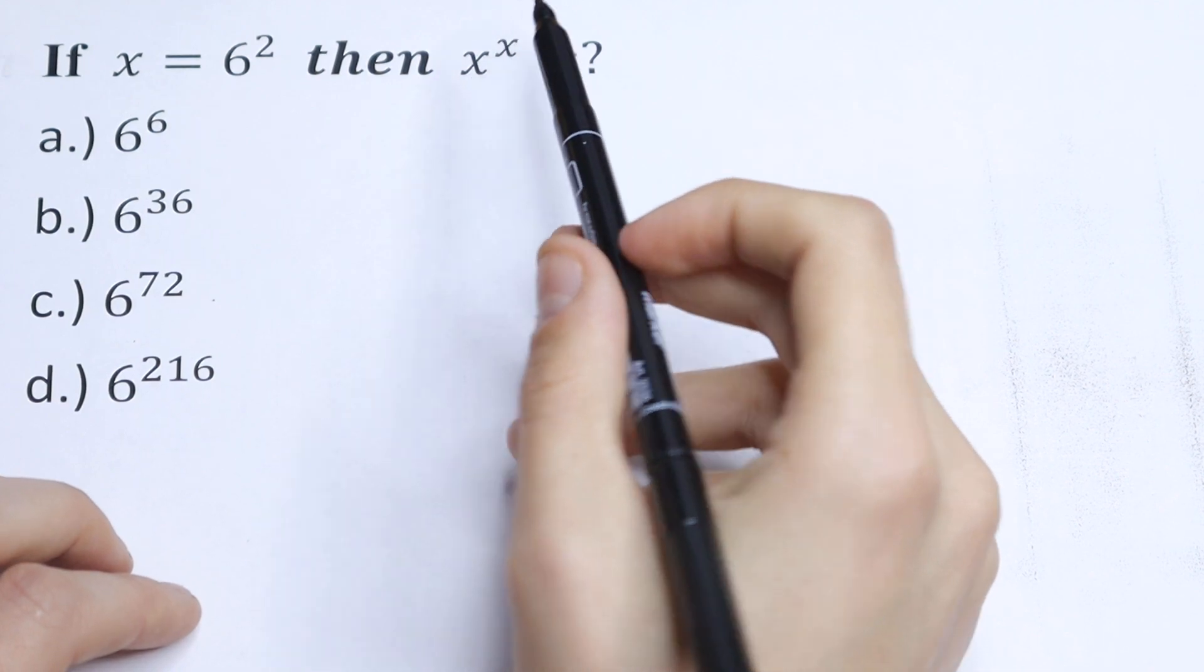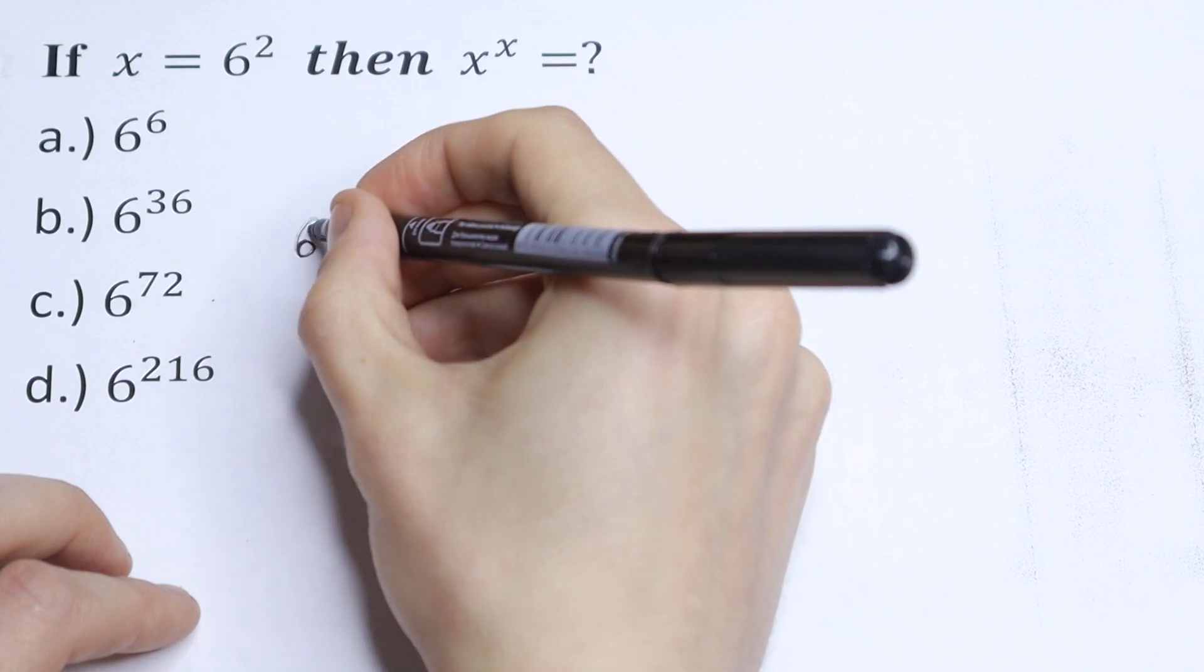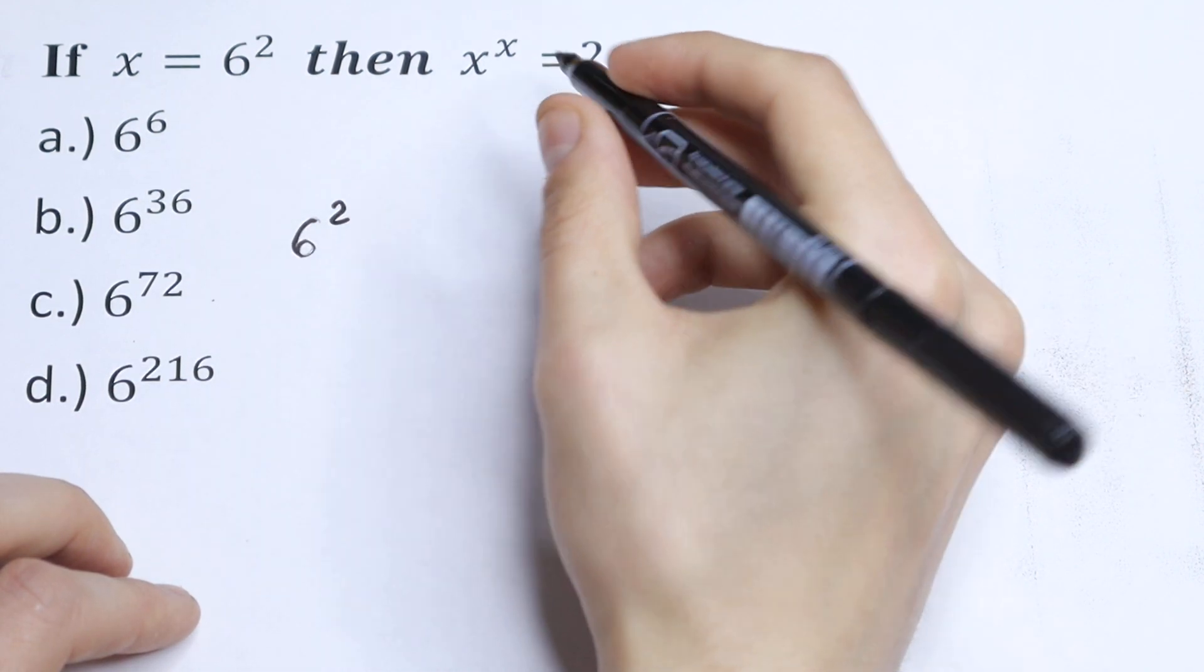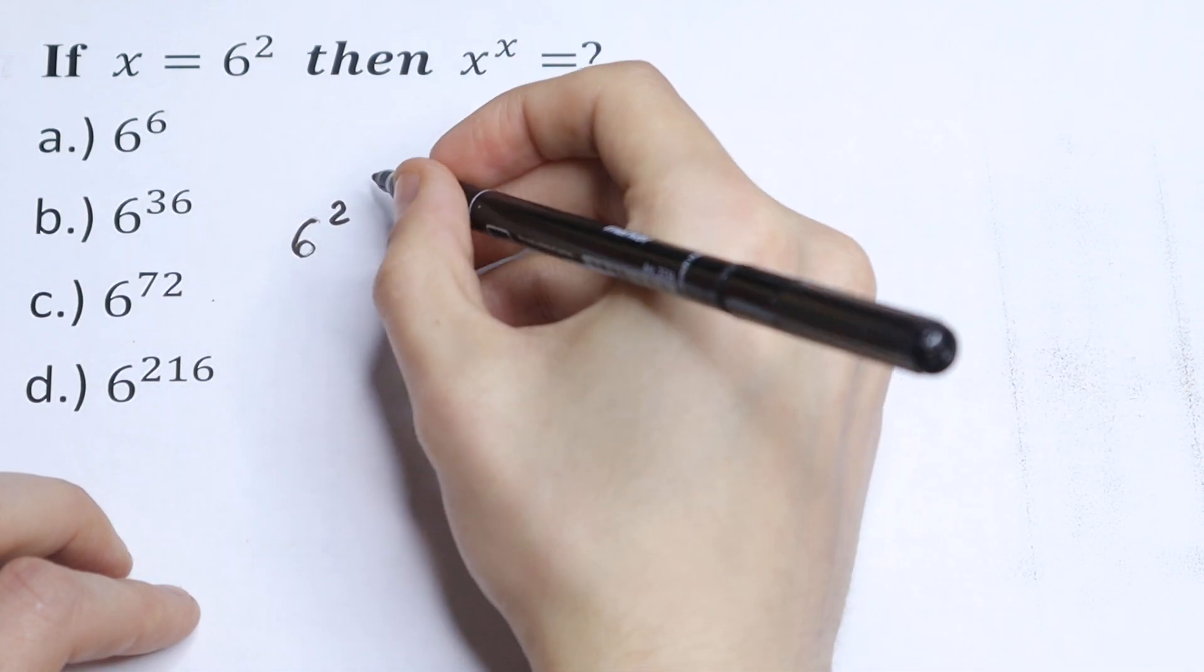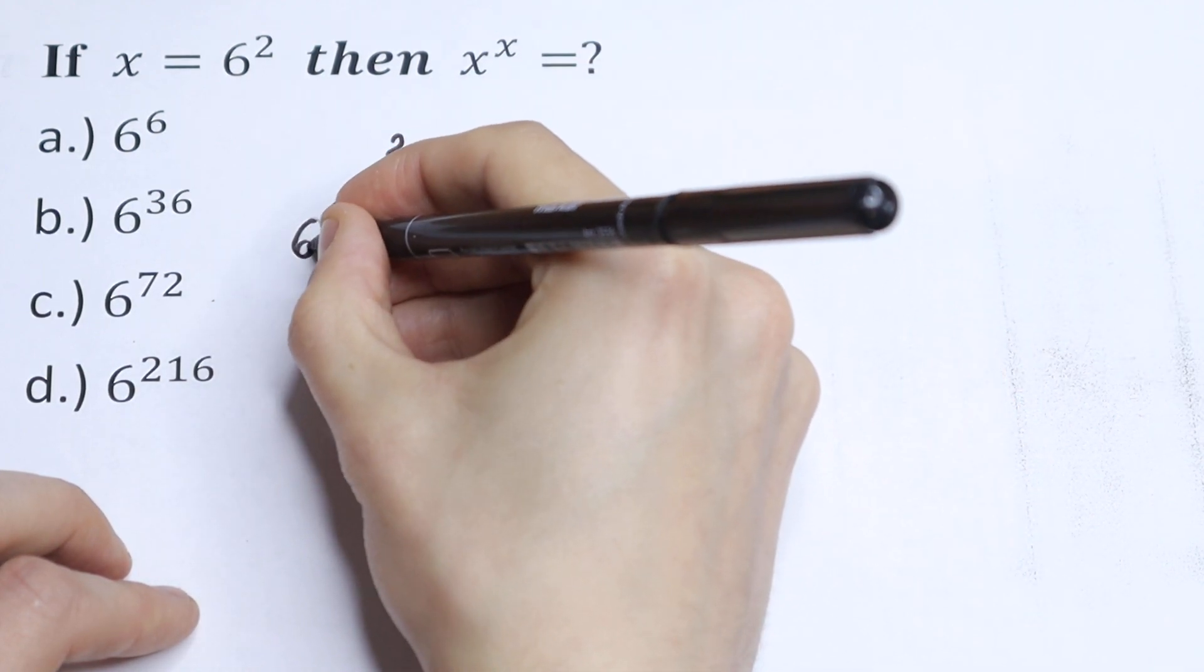We need to find x to the power x, but x equals 6 squared. Then we need to write 6 squared, this is our x, and raise to the power x, so the same power. To the power 6, to the power squared. And we need to simplify this.